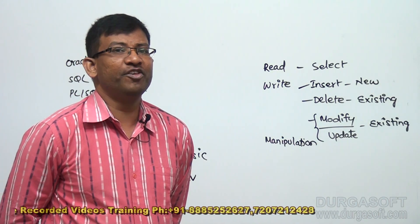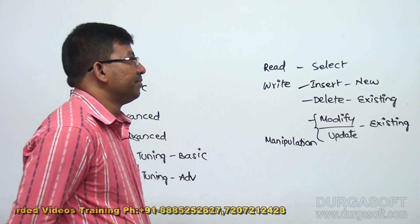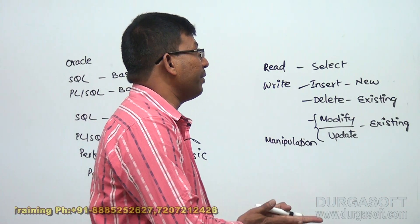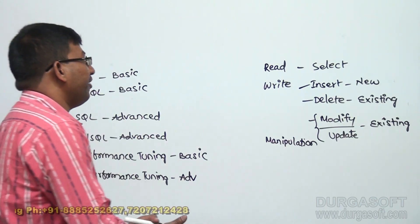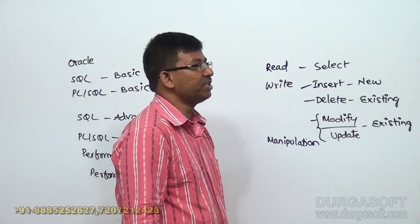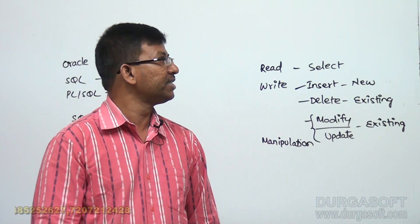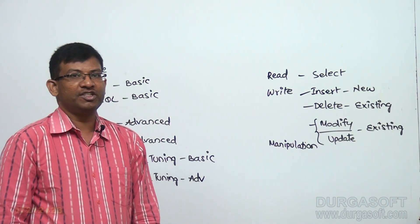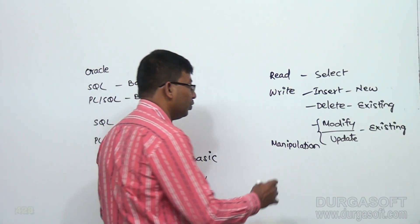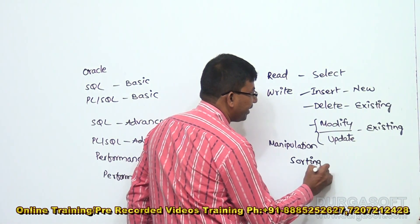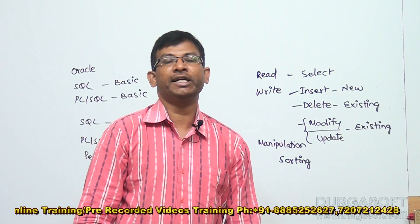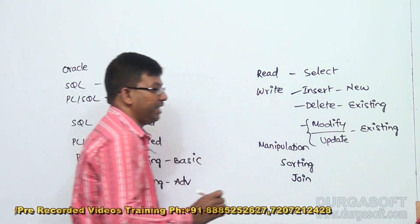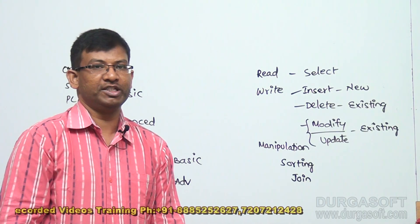We also perform joins between the data stored in the database. As part of database communication we perform storing of data in the form of INSERT, retrieving data through SELECT, deleting data through DELETE, modifying data through UPDATE, and sorting — that is rearranging data in ascending or descending order based on a particular attribute or column — as well as join operations between tables.